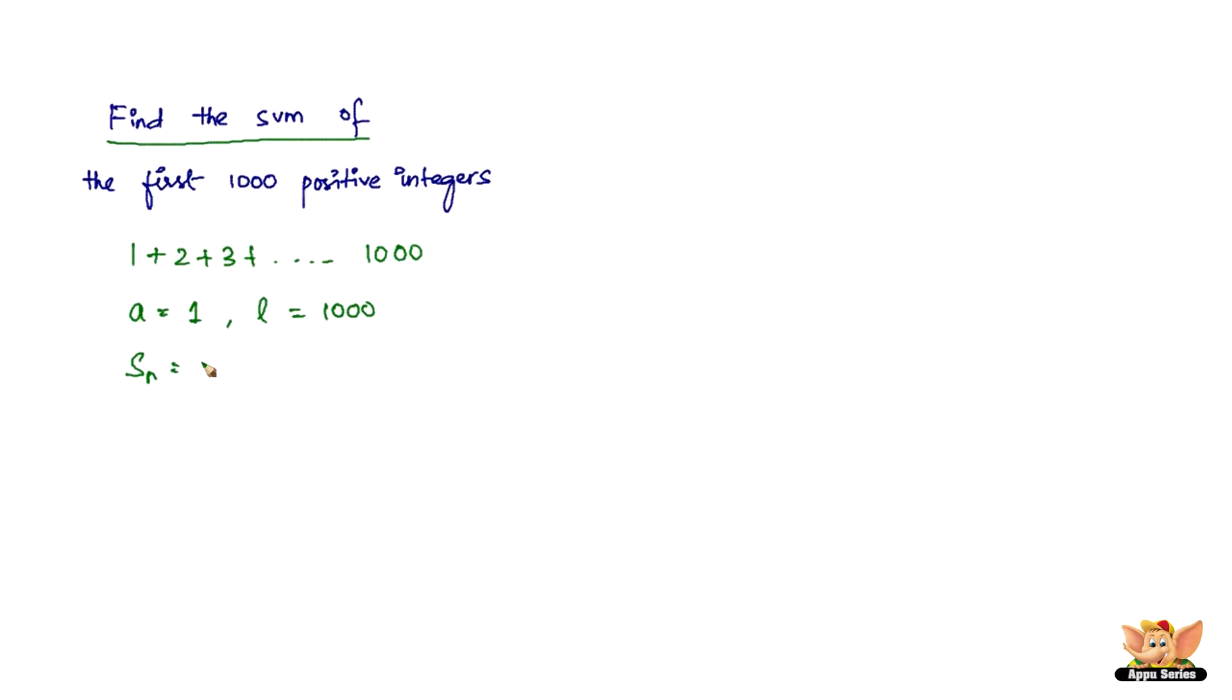And also we know n equals 1000. So we've got 1000 divided by 2 times 1 plus 1000. 2 goes 500 times in thousand, so you have 500 times thousand and 1. 500 times thousand and 1 is nothing but 5 lakh 500. So the sum of the first thousand positive integers is 5 lakhs and 500.